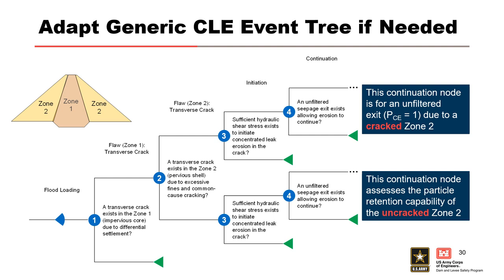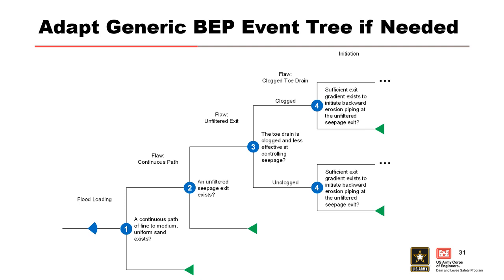Generic event trees will be presented in this training course and it may be necessary to adapt or decompose the generic event tree to project-specific conditions. In this example of a zoned embankment, the likelihood of zone 2 cracking is being assessed — the outcome affects both initiation, because of effective length and hydraulic gradient, as well as the exit condition. To assess the performance of seepage control features like toe drains, a node can be added to assess the likelihood of poor performance, which impacts the likelihood of initiation in the subsequent node. In this example, the impact of a nonwoven geotextile filter wrapping a toe drain was being assessed.